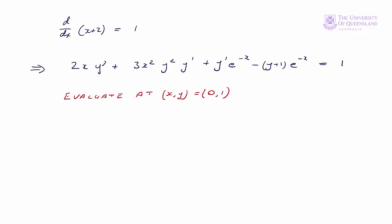We want to find the slope at (x,y) equals (0,1), so we substitute values in there. We'll have 2 times 0, 1 cubed plus 3, 0 squared, 1 squared, y prime plus y prime e to the minus 0, or e to the 0, minus 1 plus 1.